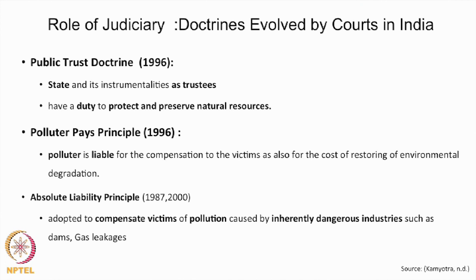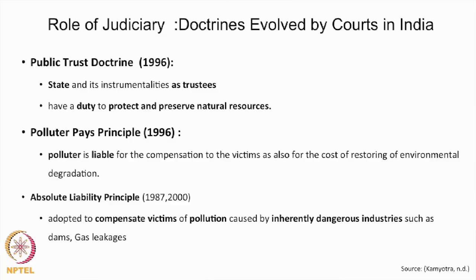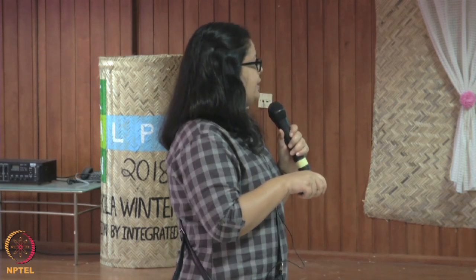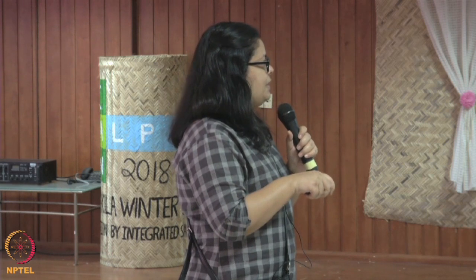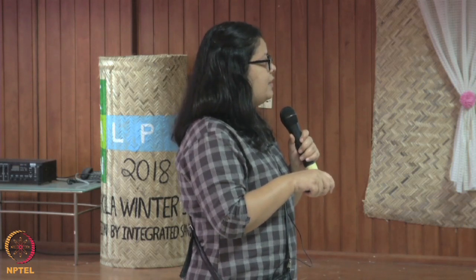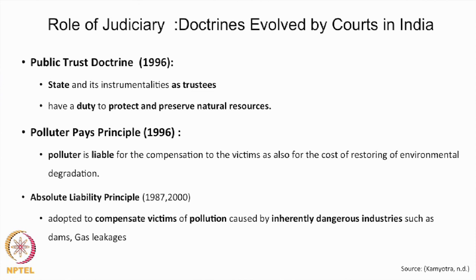The role of the judiciary has been very important and crucial in India. Courts in India evolved doctrines like the Public Trust Doctrine — established in a 1996 case — where the court held that the state and its institutions are actually trustees maintaining natural resources on behalf of the public. Then there is the Polluter Pays Principle, which was also given direction by the courts of India. And then the Absolute Liability Principle — meaning that for certain inherently dangerous industries like dams and gas leakages, compensation must be inbuilt when you design and plan such projects.